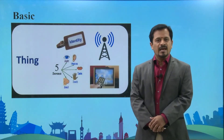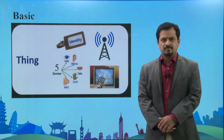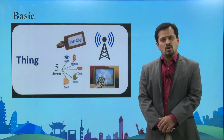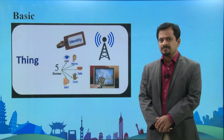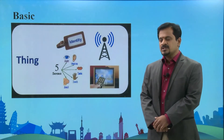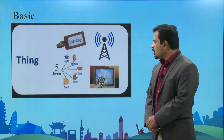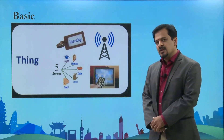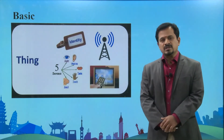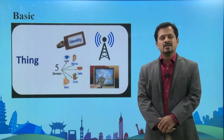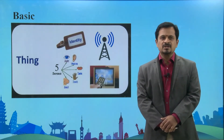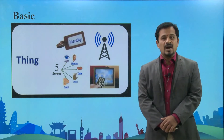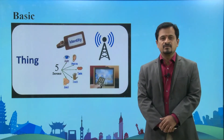The same concept has been used in the Internet of Things. These five senses have been converted into sensors and transducers, so that they identify the physical characteristics of any sense through identifying sensors.